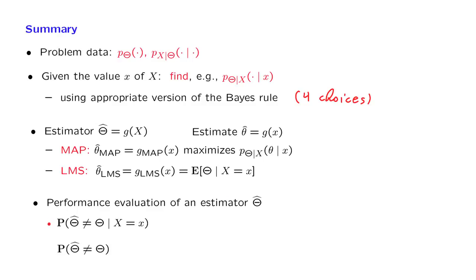Given the data that I have just observed, and given that I'm using a specific estimator, what is the probability that I make a mistake? And then there's the overall evaluation of the estimator. How well does it do on the average before I know what X is going to be?